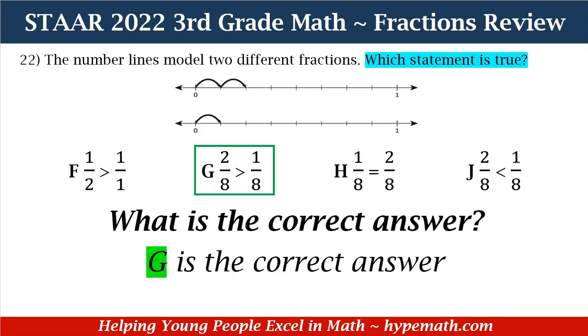So what is our correct answer? It is G. Two eighths, which is our top number line, is greater than one eighth, which is our bottom number line. Great job, third graders.